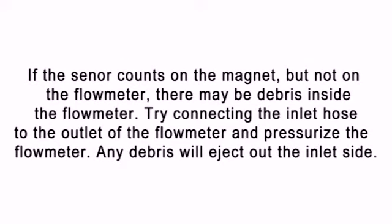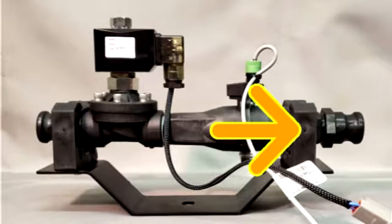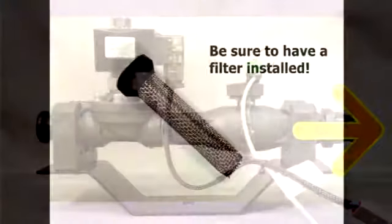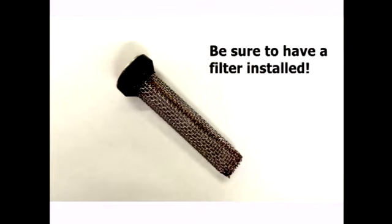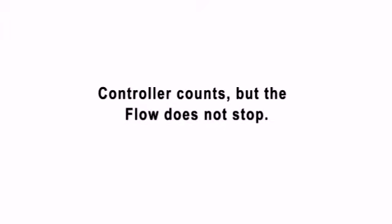If the flow sensor is counting on the magnet but not the flow meter, there may be debris inside. So let's try connecting the inlet hose to the outlet and pressurize it - this will eject anything from the inside. Also make sure you have a filter installed on the inlet side to keep debris out.